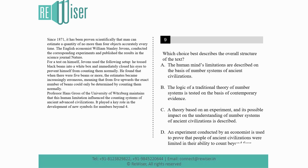Now let's look at the question: which choice describes the overall structure of the text? Option A: the human mind's limitations are described on the basis of number systems of ancient civilizations. Option B: the logic of a traditional theory of a number system is tested on the basis of contemporary evidence. Option C: a theory is based on an experiment and its possible impact on the understanding of number systems of ancient civilization is described. Option D: an experiment conducted by an economist is used to prove that people of ancient civilizations were limited in their ability to count beyond four.